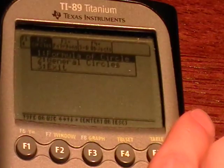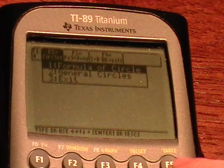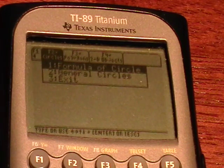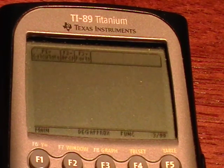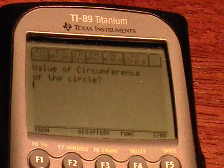We want to use the general circles function under the circles tab. You get to the circles tab by hitting F5. We'll select item 2, and then under parts we'll enter pi for the circumference.